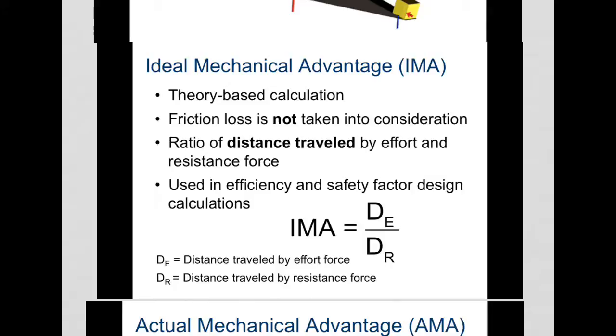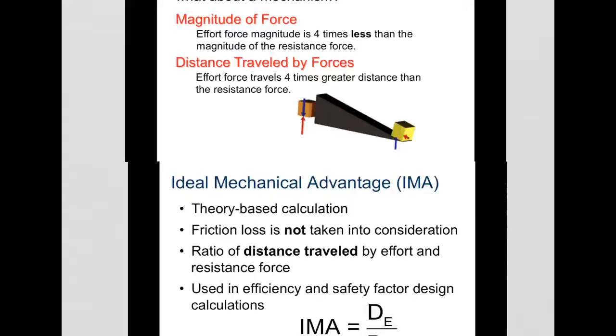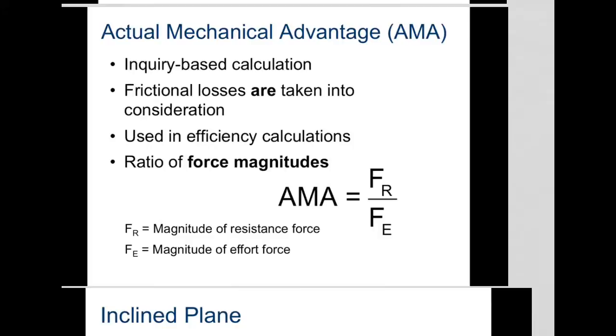For each of these simple machines, we're going to look at what the distance of the effort is and what the distance of the resistance is, because they're different for each simple machine. You think about them differently. Actual mechanical advantage is still the force of the resistance over the force of the effort.